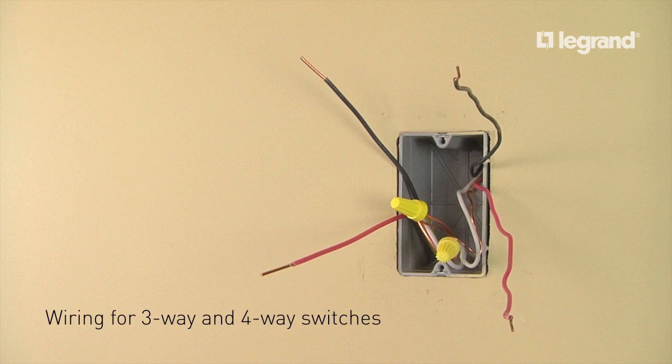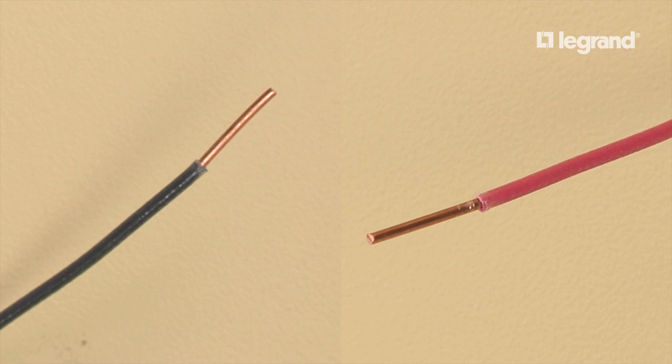This is the typical wiring used for 3-way and 4-way switches. Black is hot, red is hot, white is neutral, and bare copper is ground. Black and red wires are referred to as travelers, and either one can be hot depending upon the position of the 3-way and 4-way switches.